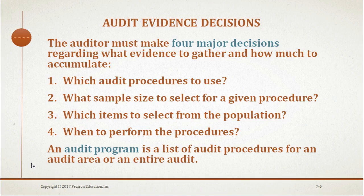After the sample size for an audit procedure has been determined, the auditor must decide which items in the population to test. For example, in an audit procedure to verify the cash disbursements journal, the auditor can select the 50 disbursements with the largest amounts, or the auditor can select the items randomly. There are several different methods the auditor can use to select specific items for testing.